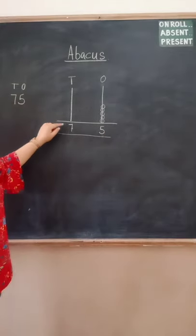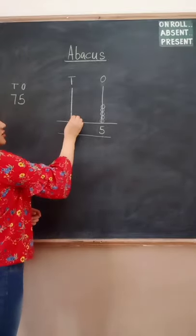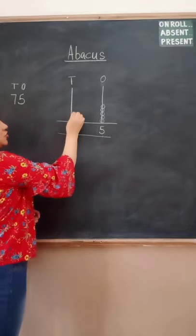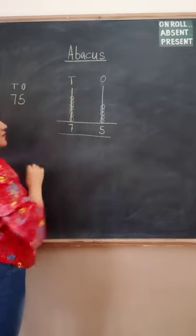Here on the tens tag, the digit given is, you have written is seven. So you can draw seven beads. One, two, three, four, five, six and seven.